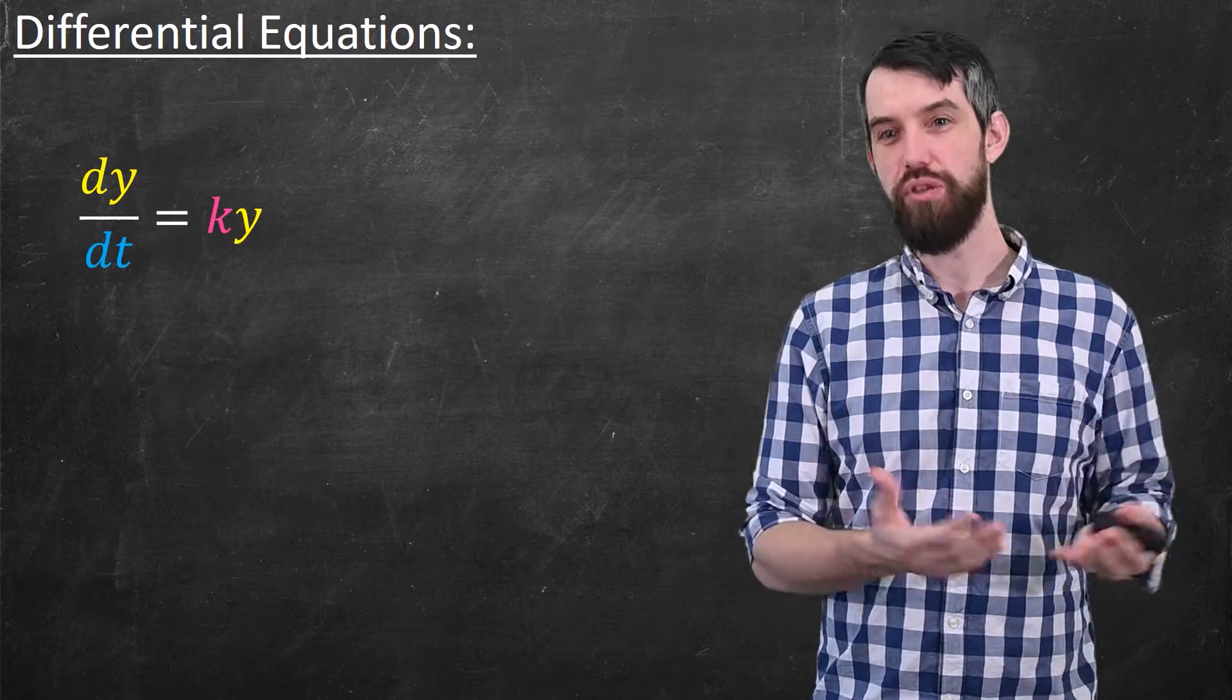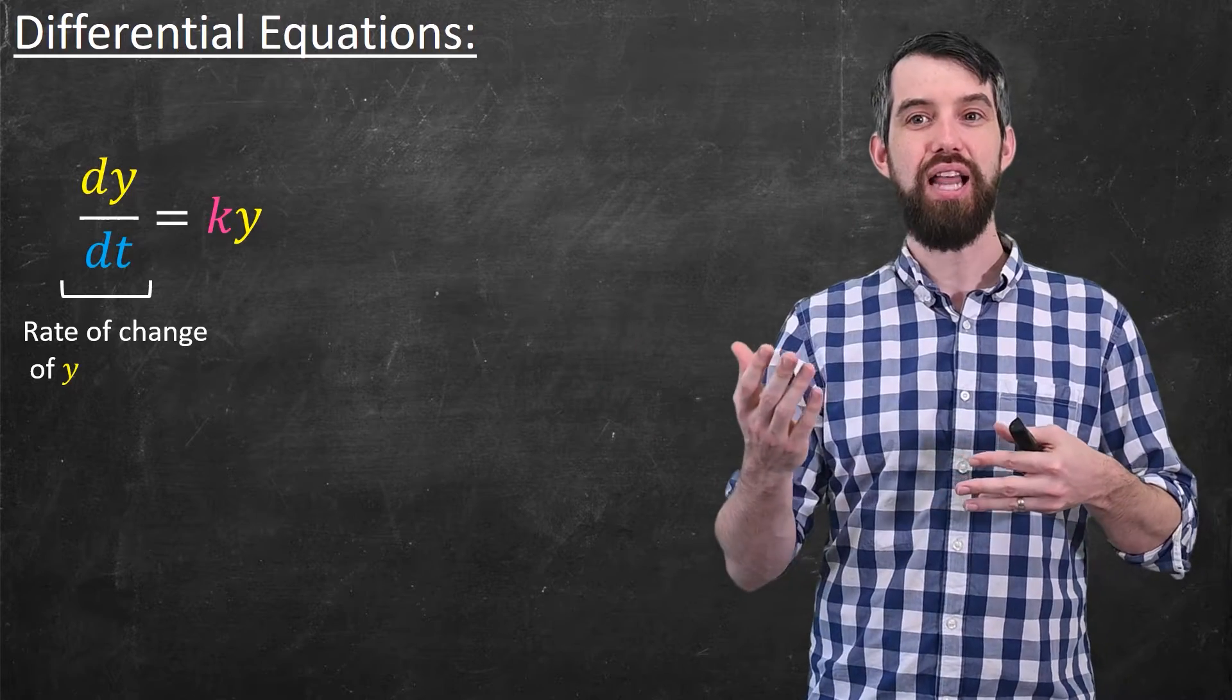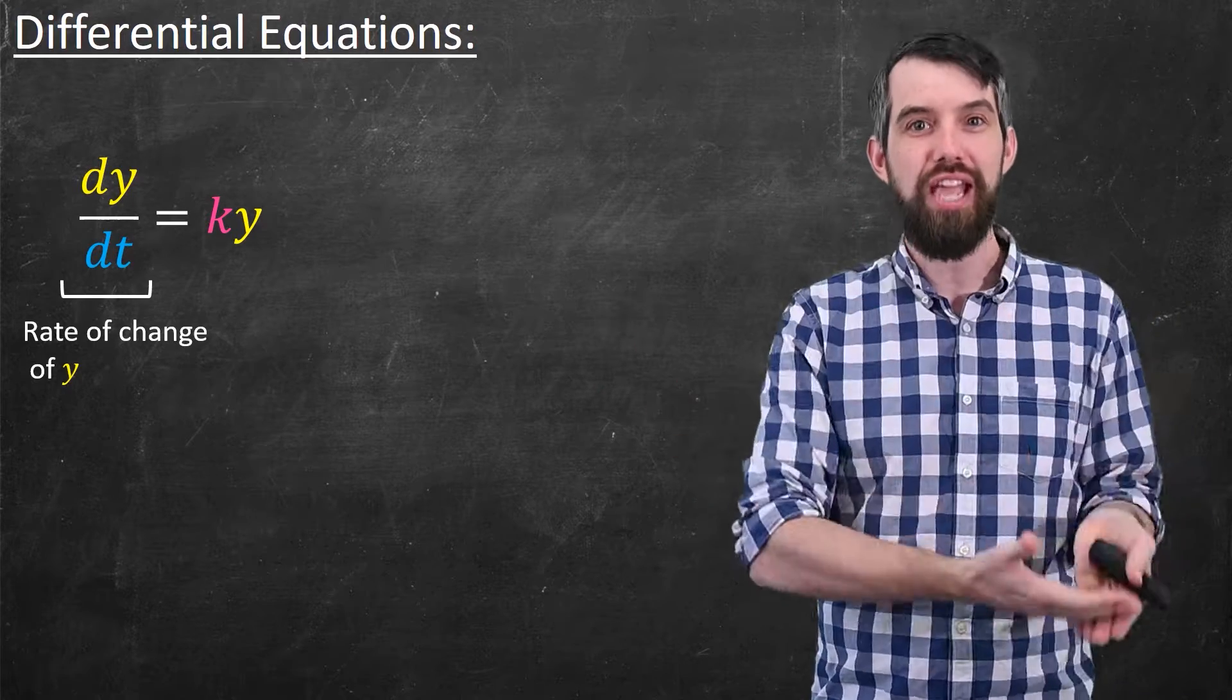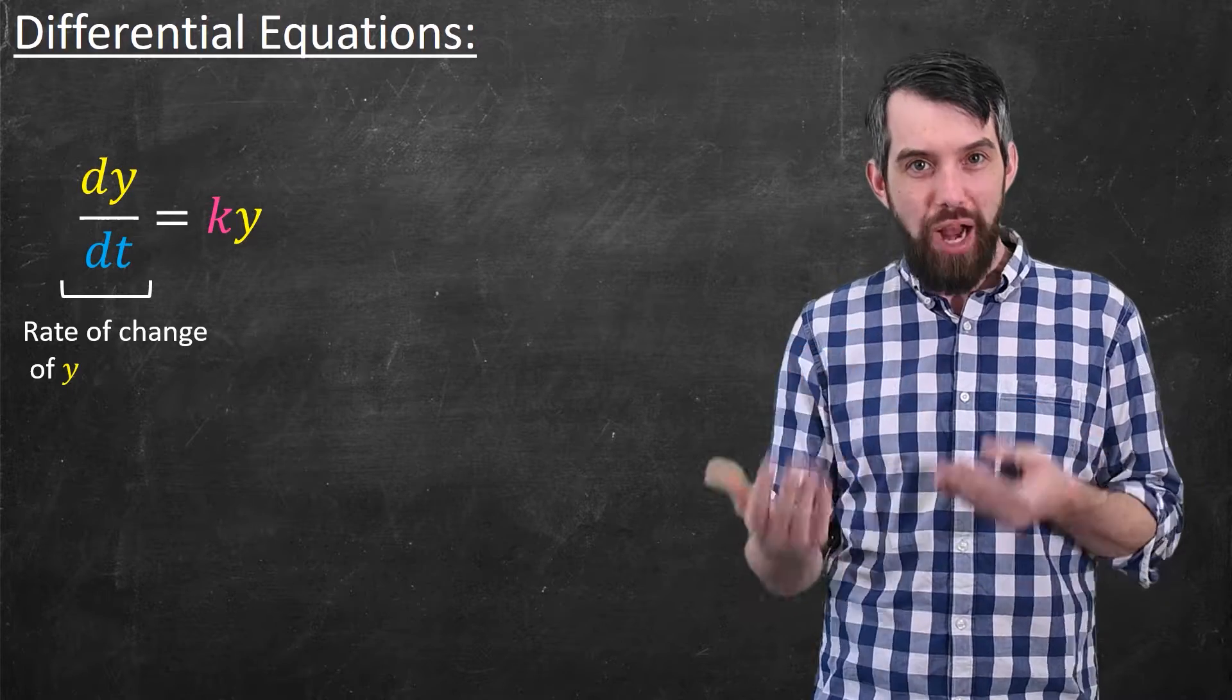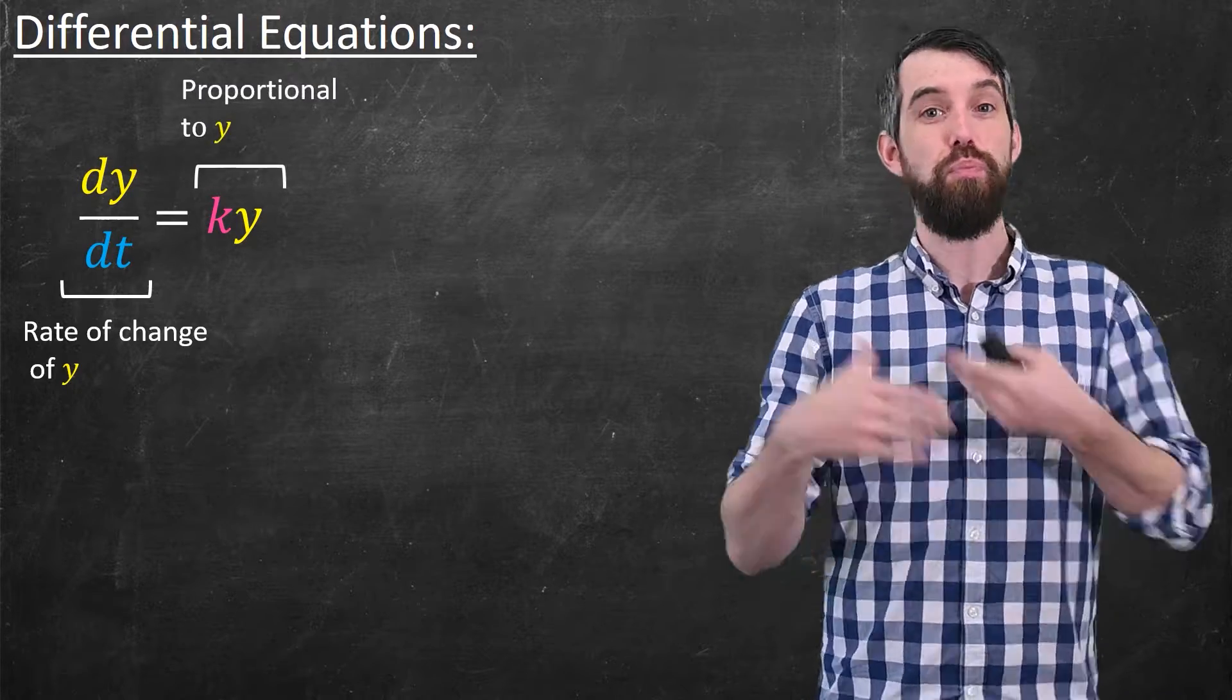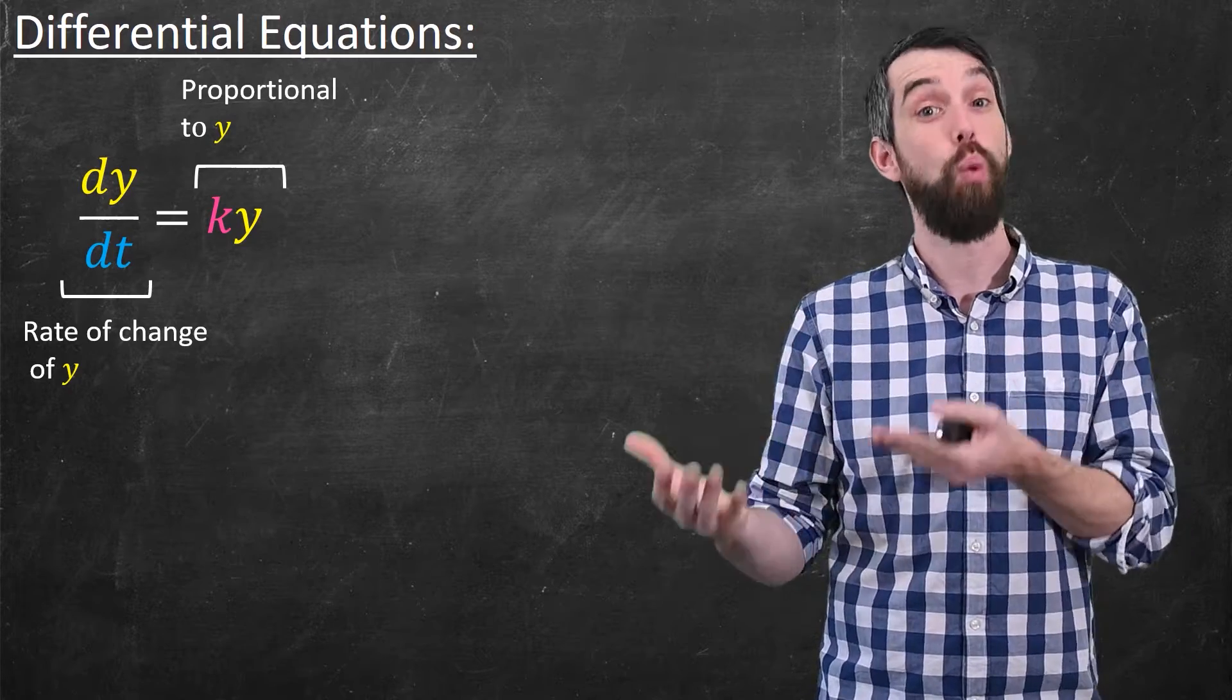Now, why would this differential equation be useful? What's happening on the left side is that I have a rate of change of y. That's what a derivative represents. Whereas on the right-hand side, I'm claiming that this is proportional, some proportionality constant k, just to the variable y itself.